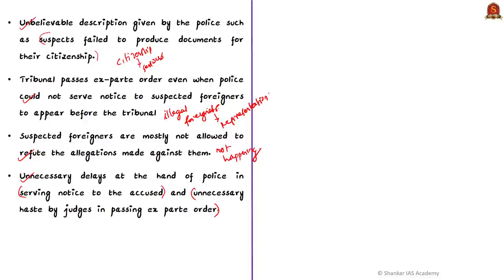The author also cites unnecessary delays by police in serving notice to the accused and unnecessary haste by judges in passing ex parte orders. All these indicate an urgent need to make the procedure followed by these tribunals more fair, more equitable, more inclusive, and more transparent. If even one person is not given adequate chance to prove citizenship, we cannot call this process completely genuine and transparent.